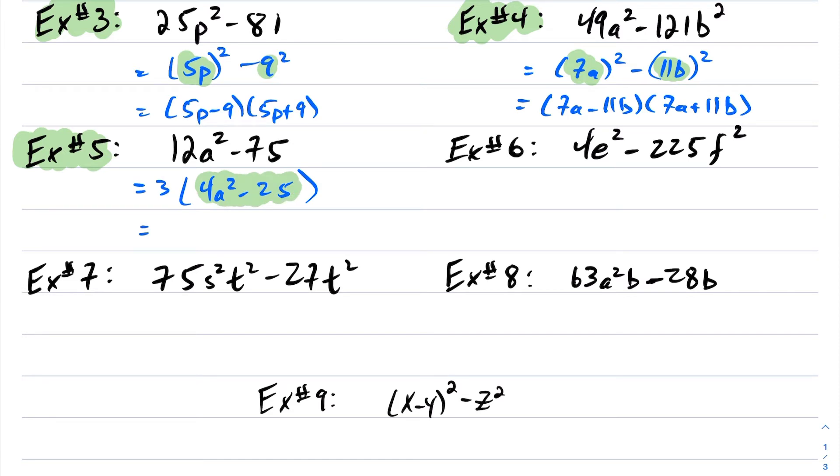And now this is much easier to factor. So now I have to write this with powers of 2. So I would rewrite this as 3[(2a)² - 5²]. Well, now like we've just been doing, this is my x and this is my y. So don't forget to write that 3 back down. And this becomes 3(2a - 5)(2a + 5).